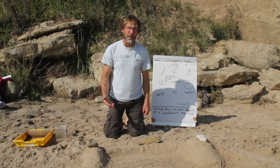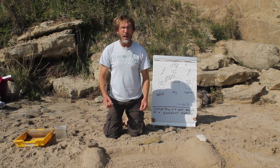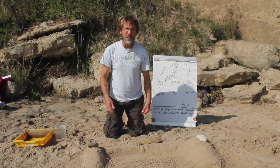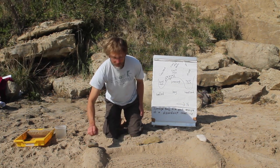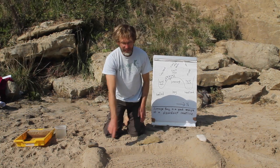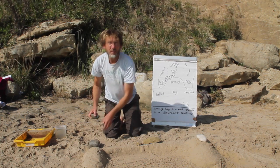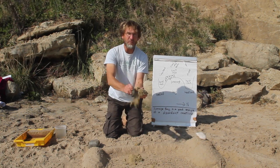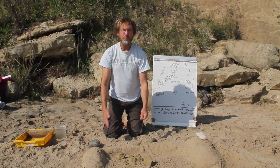Swanage Bay needs coastal management because of the type of rocks in the bay. They've built a town on soft rocks and because it's open to the sea and the waves from the east, it's vulnerable. Swanage Bay is an example of a discordant coastline where headlands of hard limestone and hard chalk are found on either side, and a bay of soft sandstone and clay in the middle. The limestone is very hard, the chalk is very hard, the clays and sandstone are very soft — so by building a town on those soft rocks, you're going to have problems.